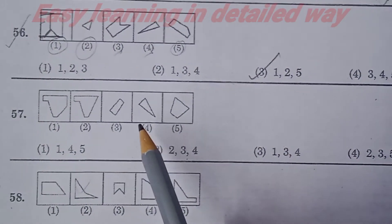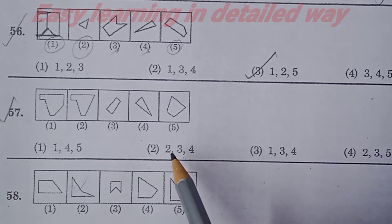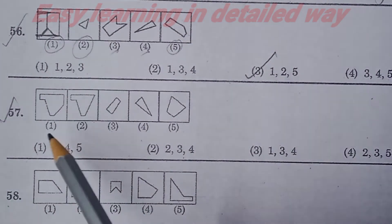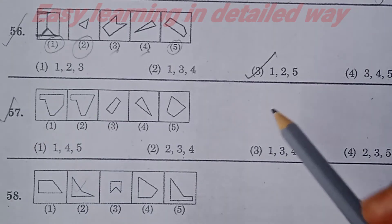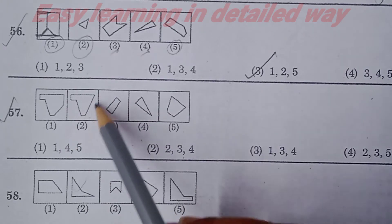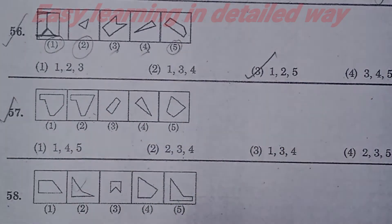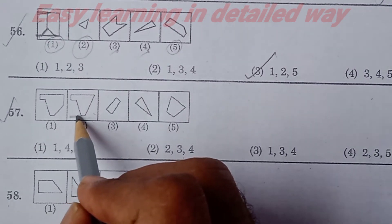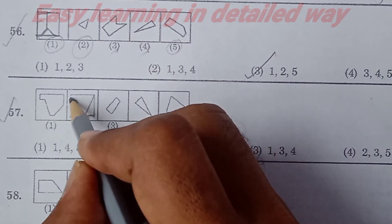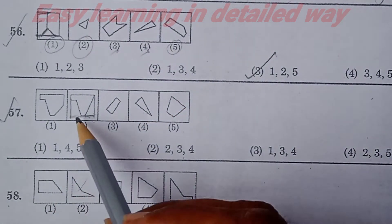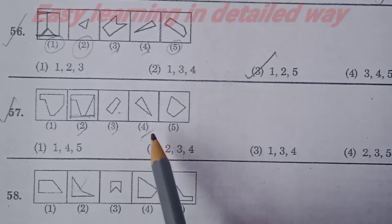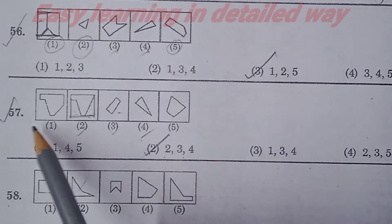Now see question number 57. This is the triangle suit — this is the remaining part. The answer is option 2 for question number 57.